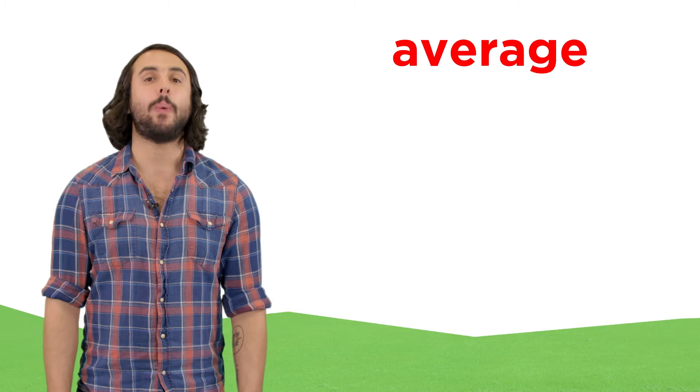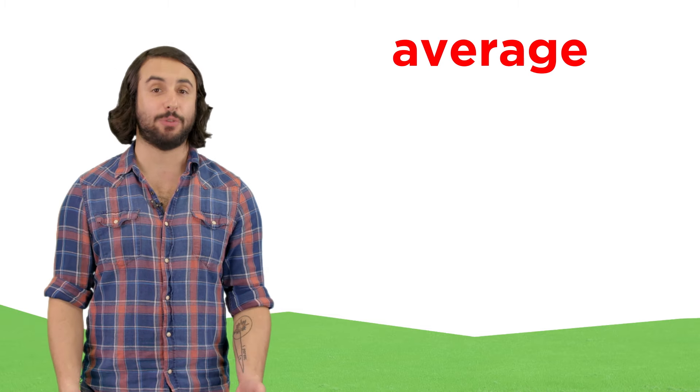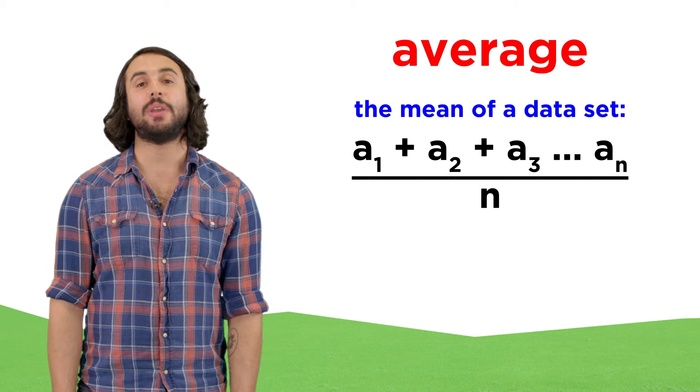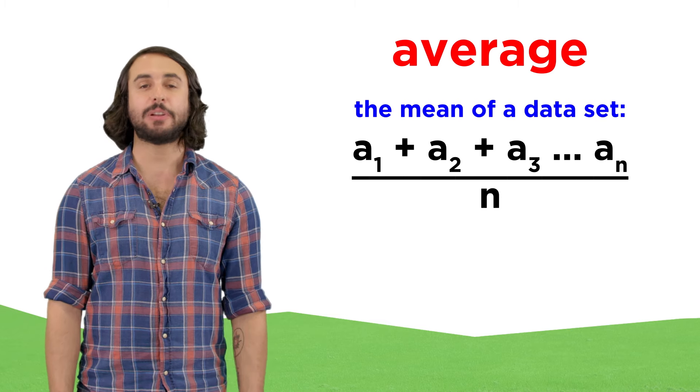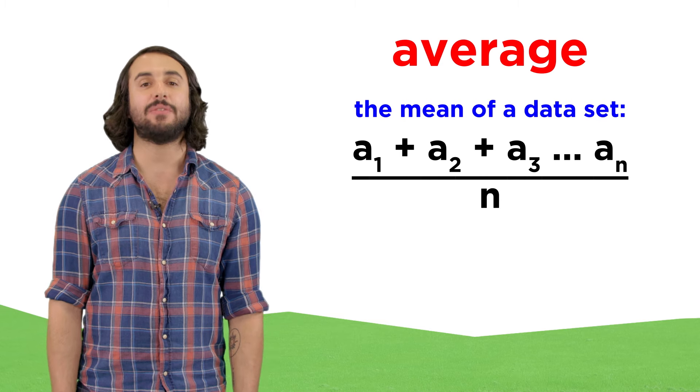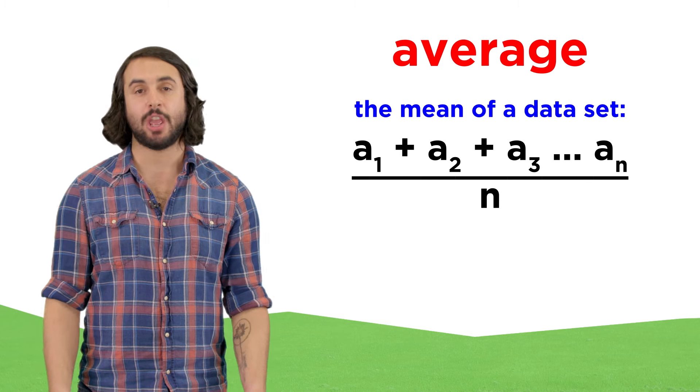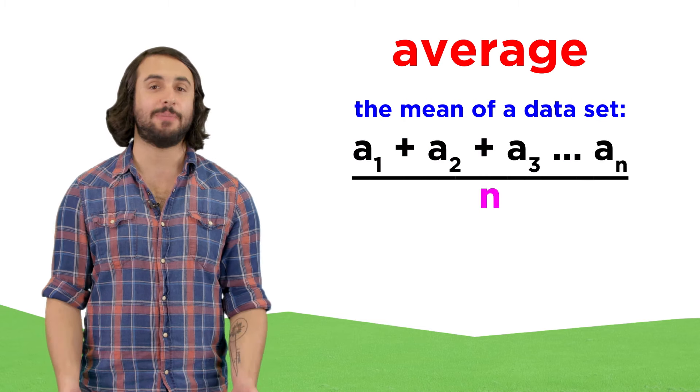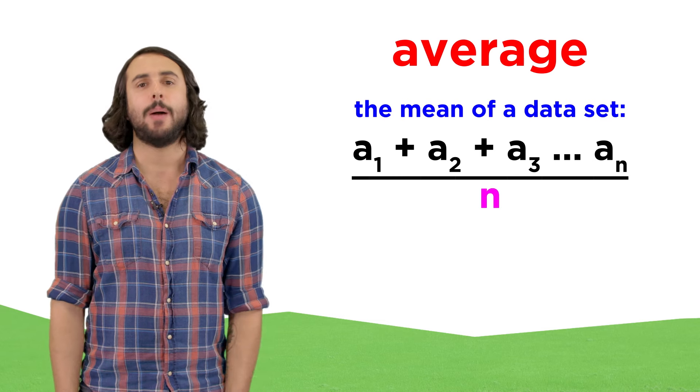Much earlier in this series, we learned about different types of averages, and understood that when we use the word average, we typically are referring to a mean value. To get the mean value for a finite set of numbers, we just add them up, and then divide by the number of items in the set.